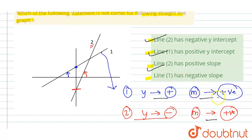Line 1 has negative slope - this is wrong. Line 1 has positive slope. So the correct option is D, that is we have to choose the wrong one, so correct option is D.